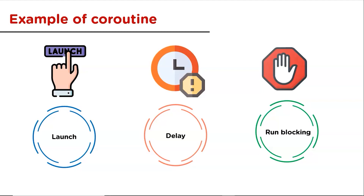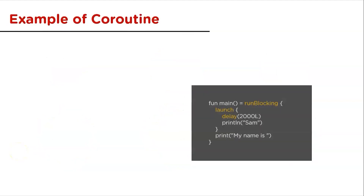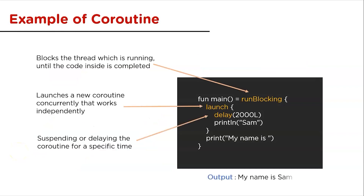Then there is runBlocking. RunBlocking is a coroutine builder that runs a new coroutine and blocks the current thread until its completion. In other words, the thread that runs it gets blocked for the given duration until all the code blocks inside the runBlocking brackets complete their execution.